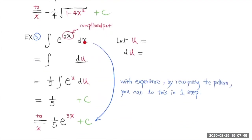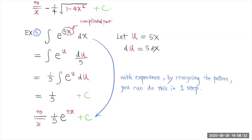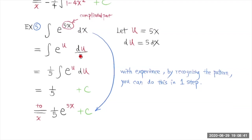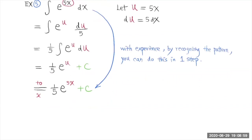Example 5. We try to find this integral of e to the 5x. If this exponent is a single variable, we know how to find the antiderivative. So let u = 5x, then du = 5 dx. This becomes e to the u, and dx is du over 5. The 1/5 is a constant multiple — put it in front. The antiderivative of e to the u is e to the u itself. Add the constant, change back to x — u equals 5x — and that's the final answer.